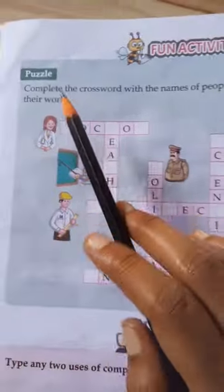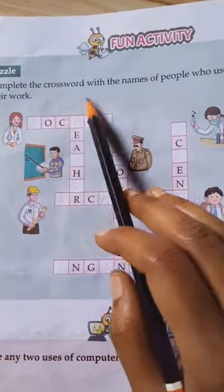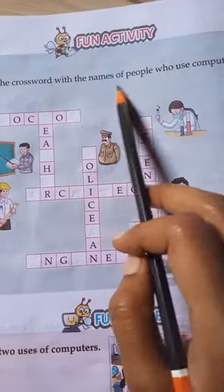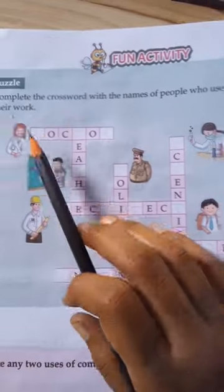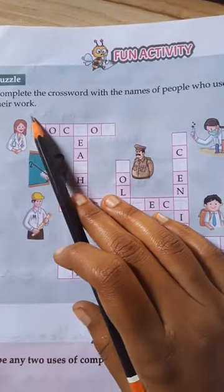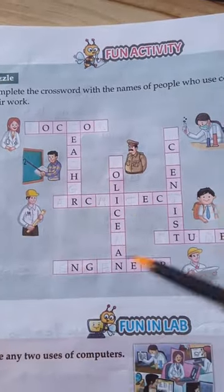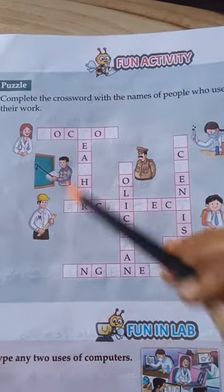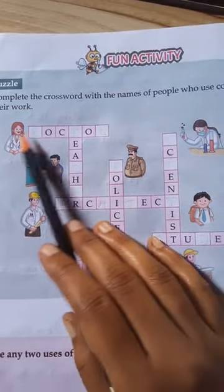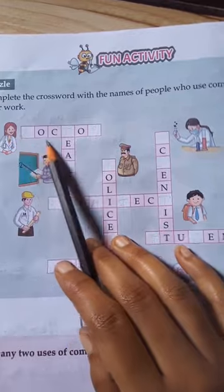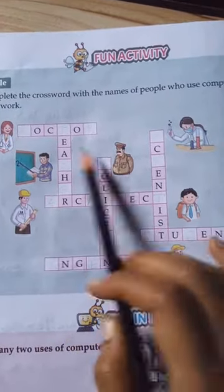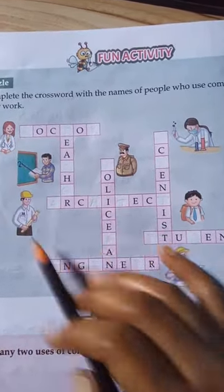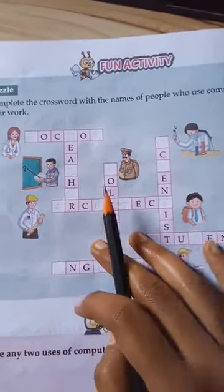What do we do in the fun activity? Complete the crossword with the names of people who use computers for their work. Here are papers and clues, and here are some words. We play crosswords — this is a crossword game.